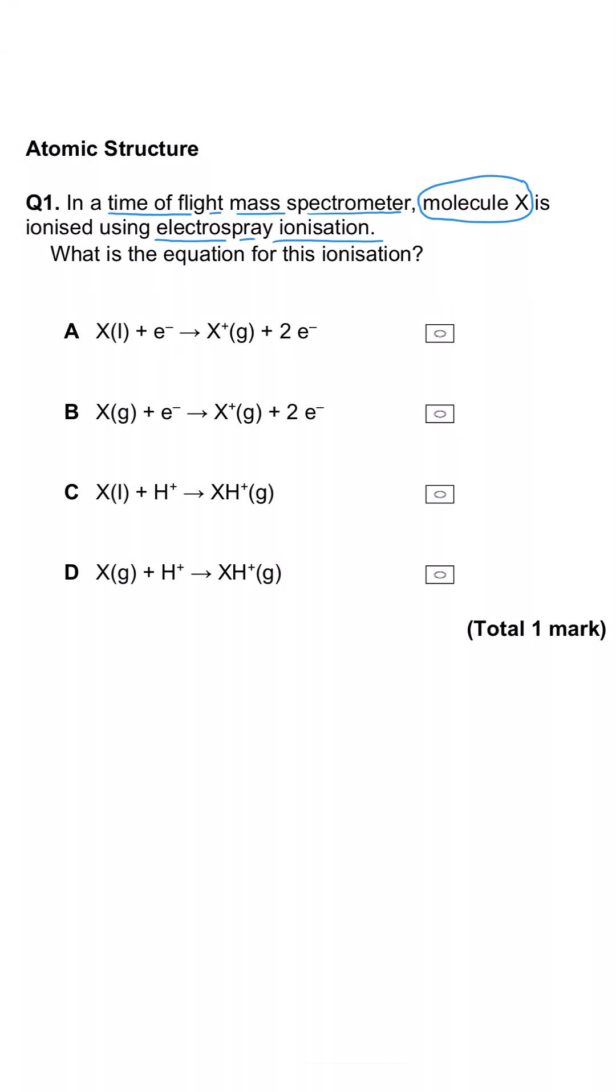Two really important facts about electrospray ionization. First of all, the molecule that is being ionized has to be in the gas phase. What that means is that we can rule out A and C because X is in the liquid phase in both of those.